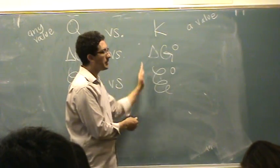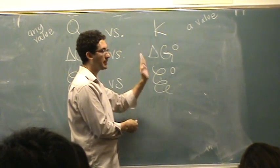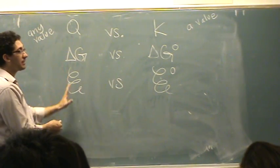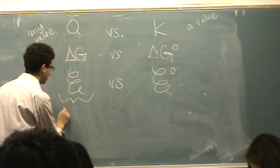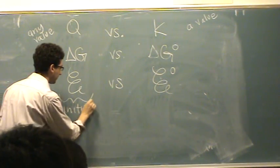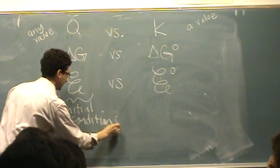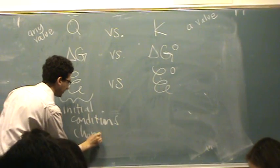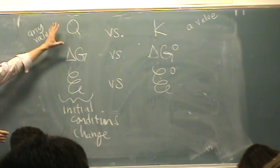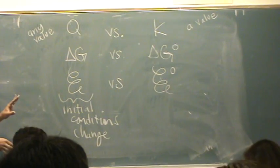These are specified particular conditions, a particular reaction. This can be anything based on initial conditions. Conditions change. So these always change over here on the left-hand side. Is that a little more helpful?